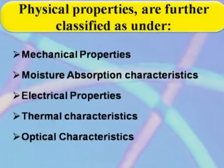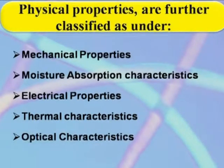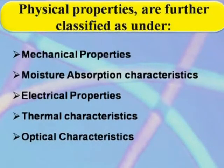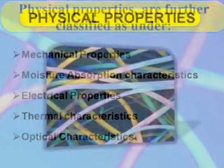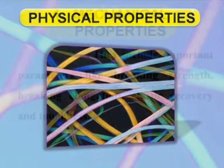Physical properties are further classified as mechanical properties, moisture absorption characteristics, electrical properties, thermal characteristics, and optical characteristics. Let us now take up the physical properties one by one.